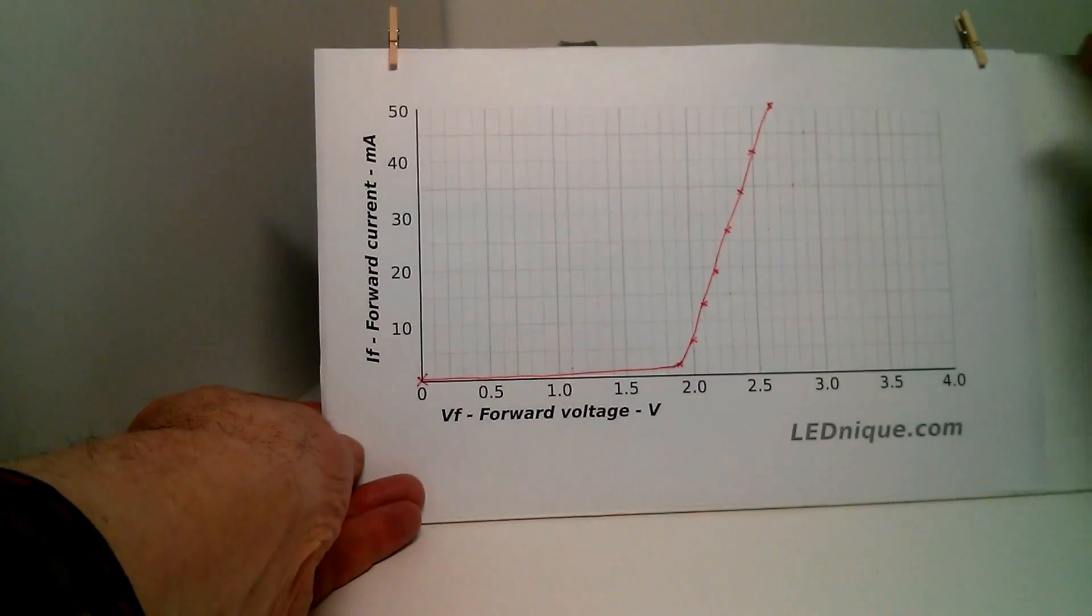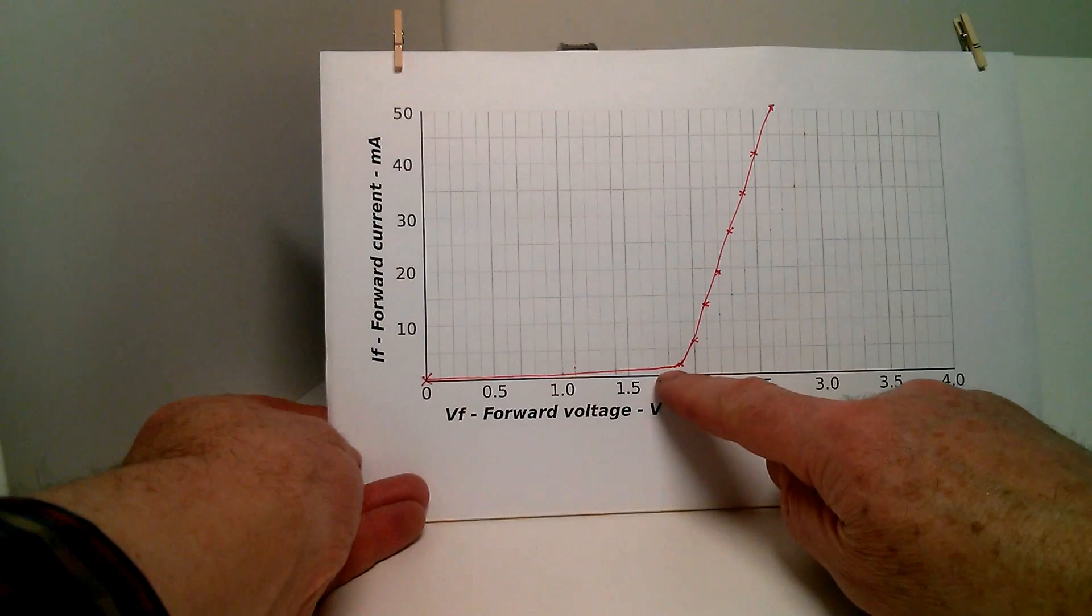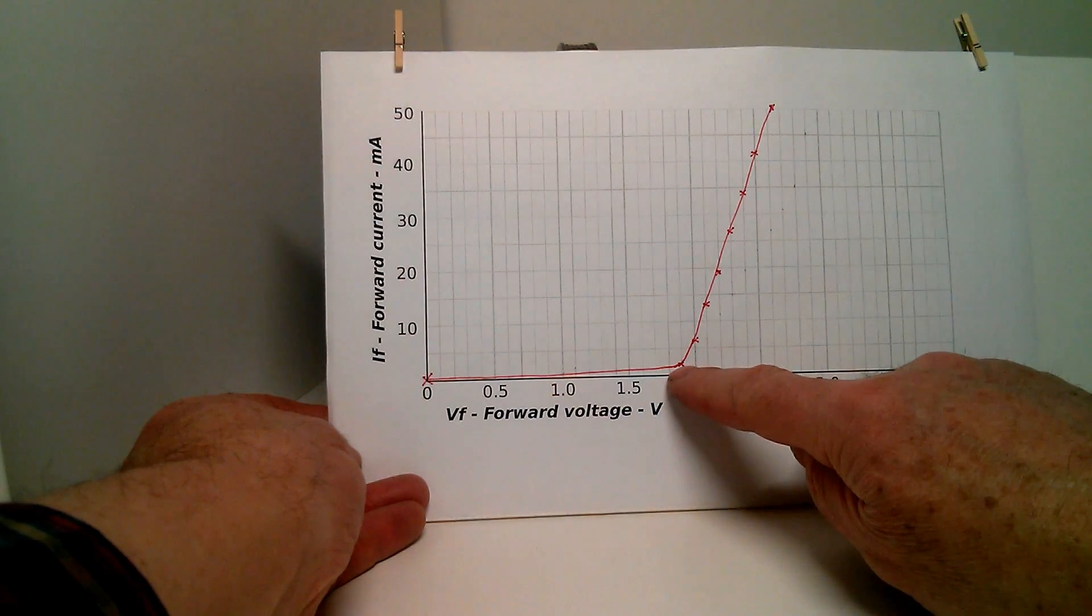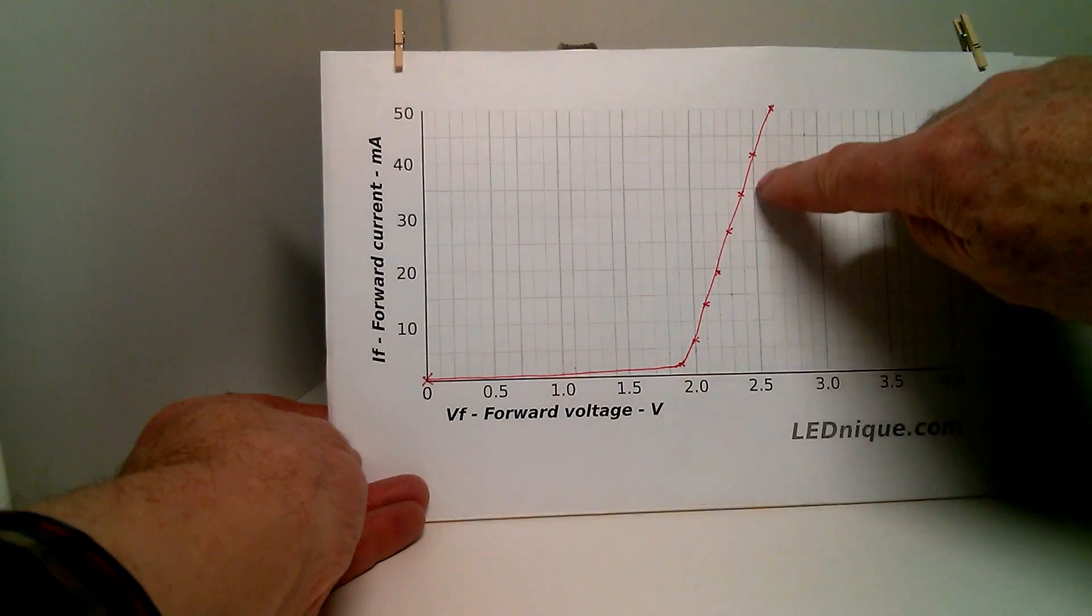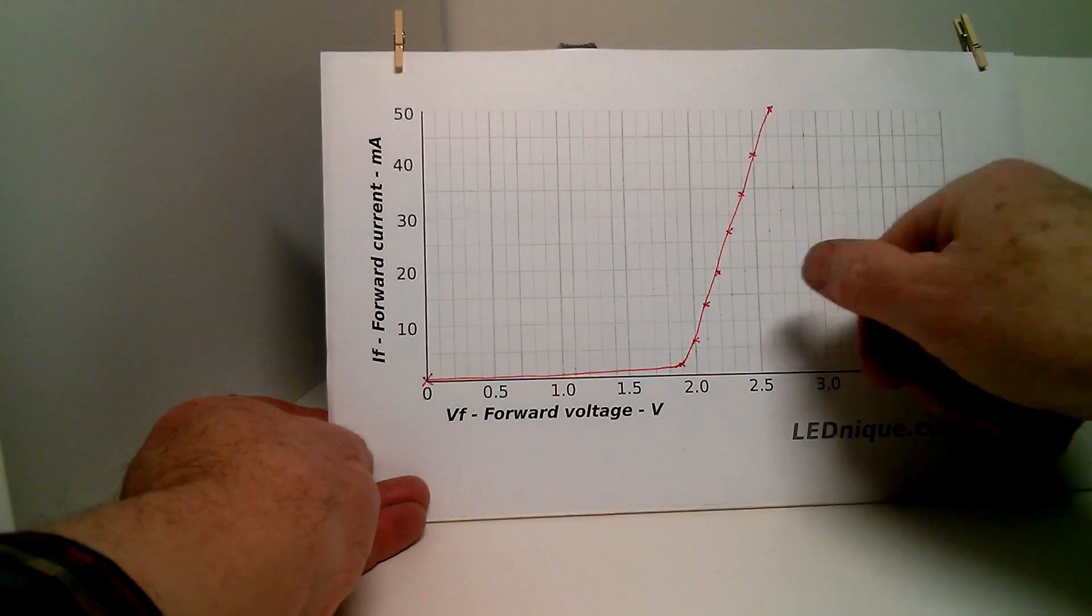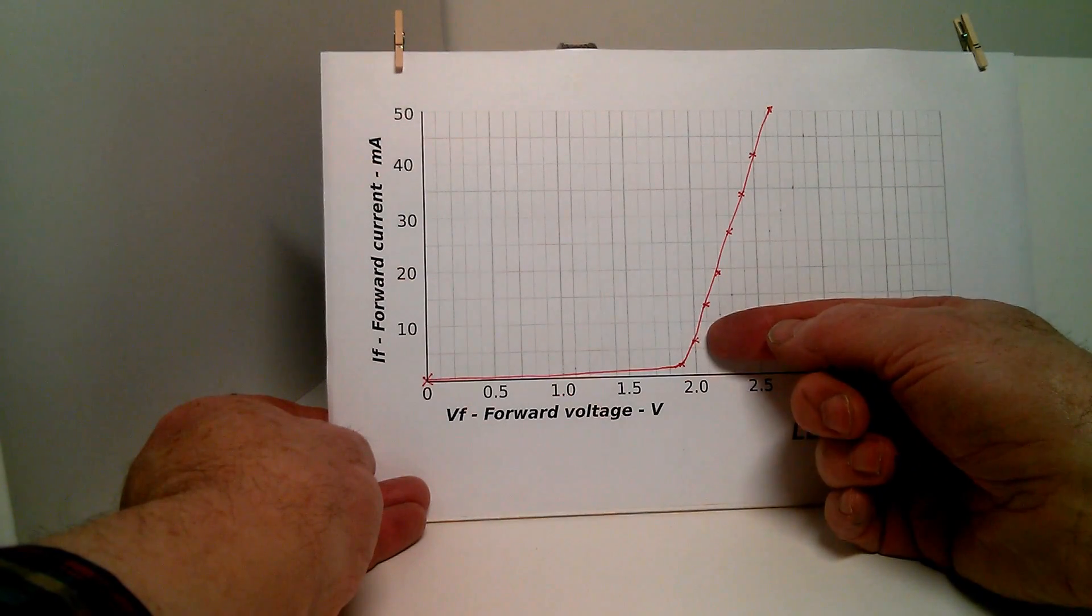Nothing happens until we reach the knee voltage or the break over voltage of the diode. And then the current starts to rise exponentially. And this is the main problem with LEDs. That a very small change in voltage from here to here will have a large change in current.